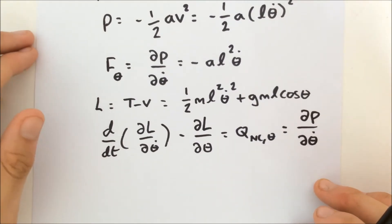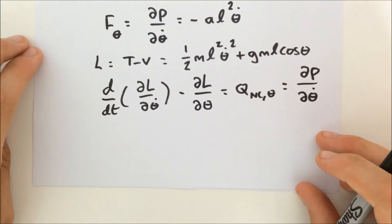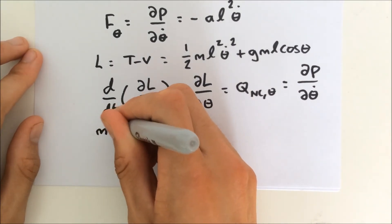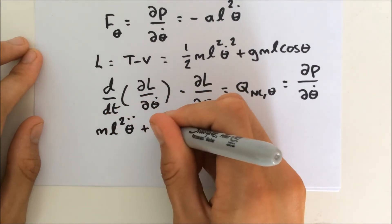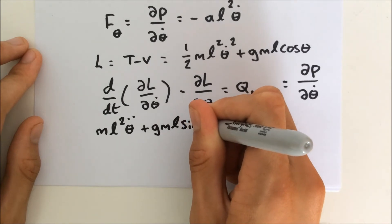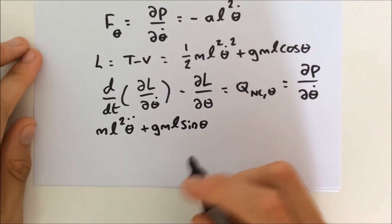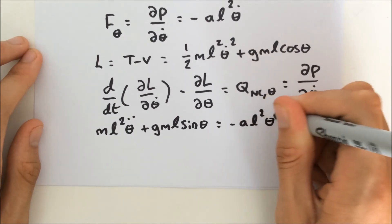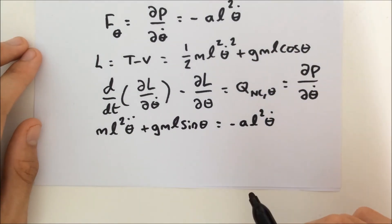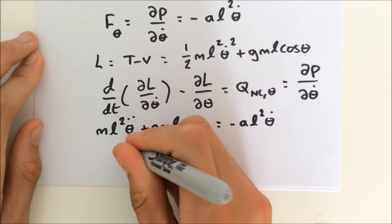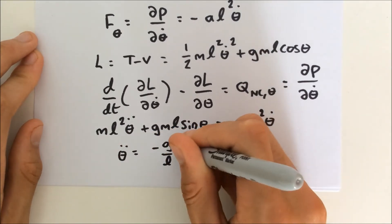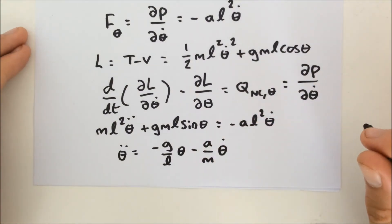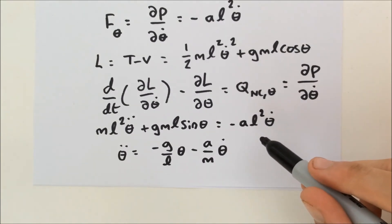Doing the calculus, the equations yield m L² θ-double-dot plus g m L sine theta, which would equal zero for a normal undamped pendulum. With the damping term, it equals negative A L² θ-dot. Taking the small angle limit, this gives theta-double-dot equals negative g/L times theta minus A/m times theta-dot, which is the equation of motion for a damped linear oscillator.